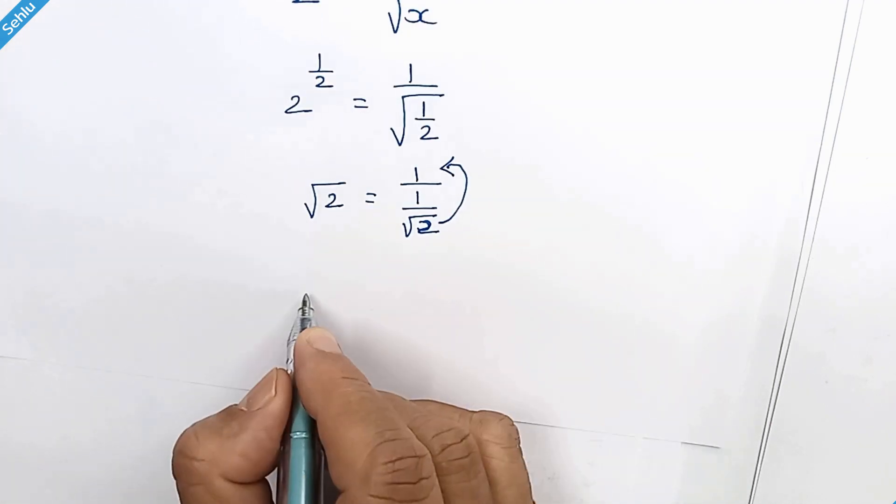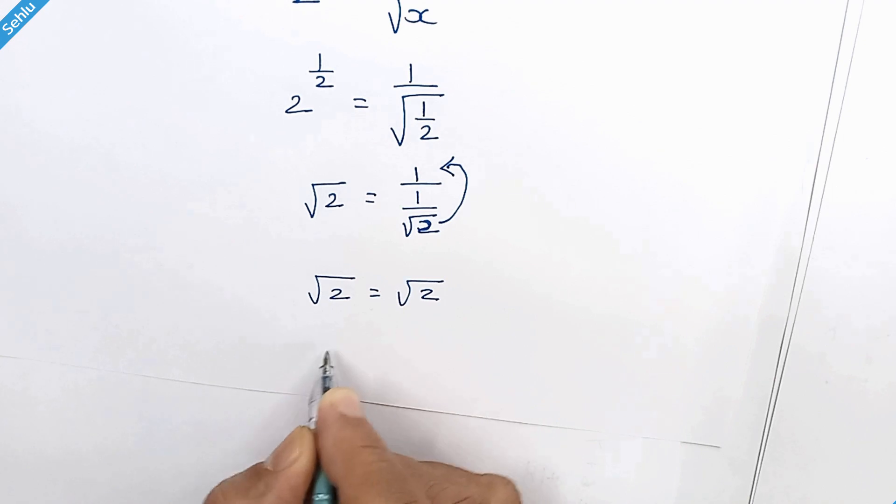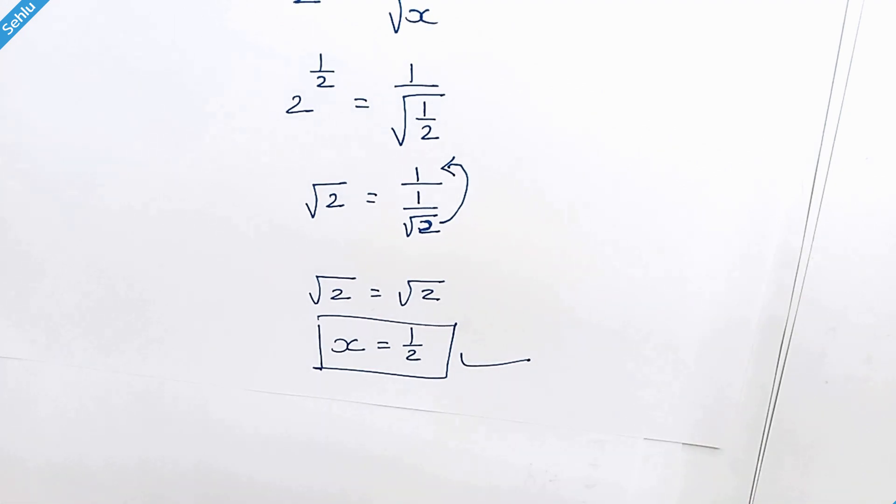This square root of 2 will be placed here. So we have square root of 2 is equal to square root of 2. So x is equal to 1 over 2 is the correct answer. Thanks for watching. Don't forget to subscribe and we will meet again very soon. Bye bye.